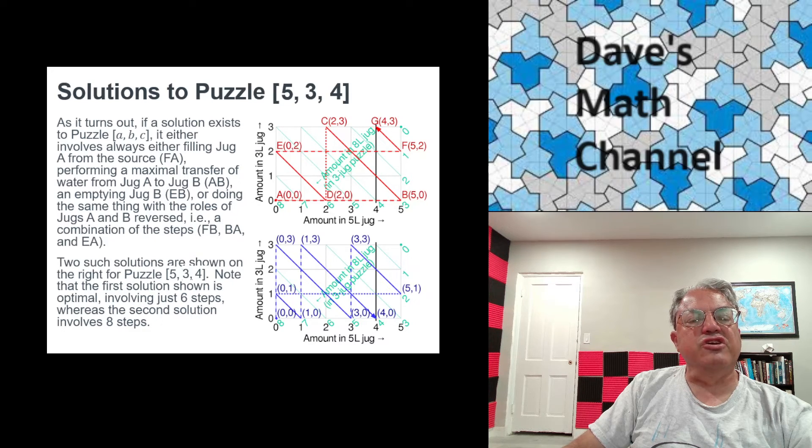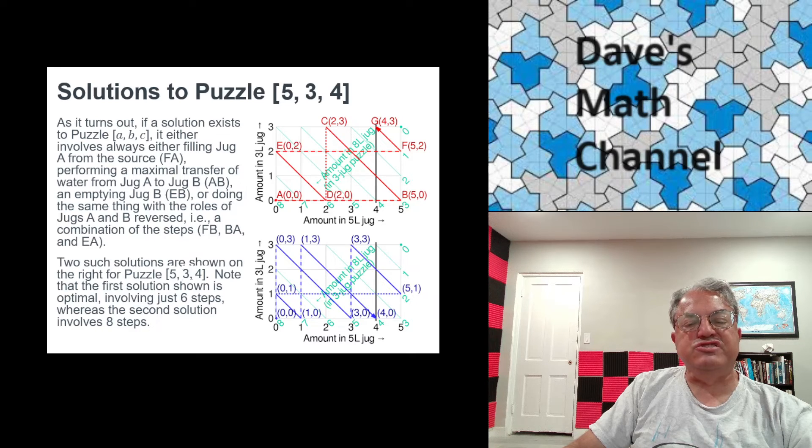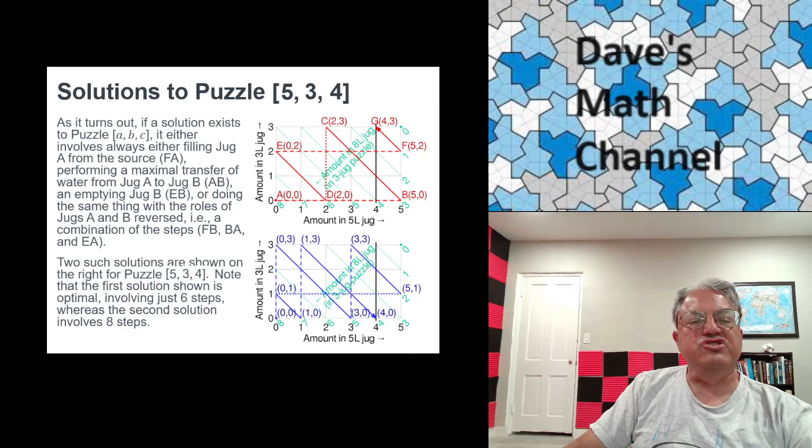And so in the blue solution, we do the opposite. We're always filling jug B. We're only filling the smaller jug. We're transferring from jug B to jug A. And we're emptying jug A. And if we do it that way, we can also solve the problem, but it takes two more steps to do it that way.